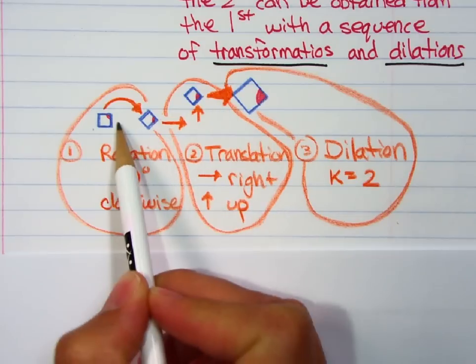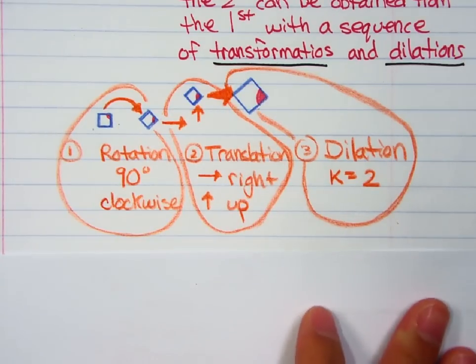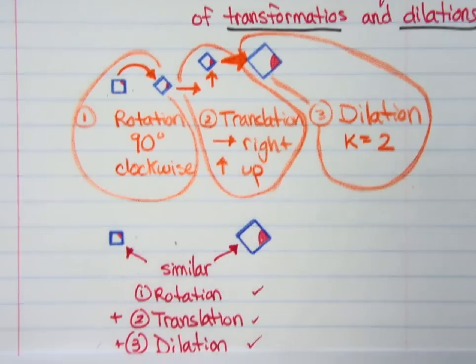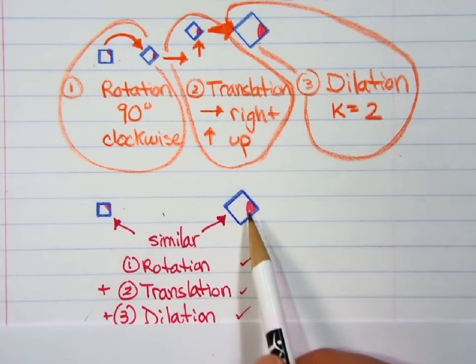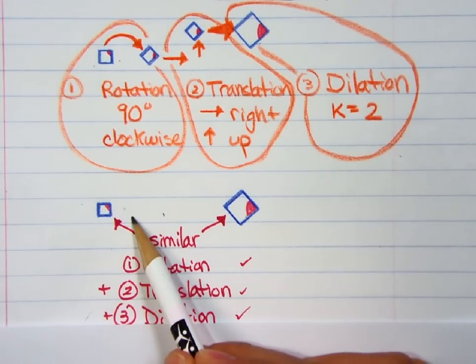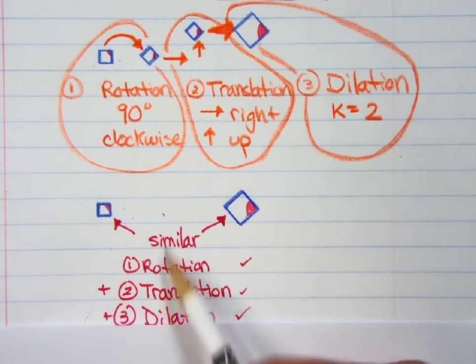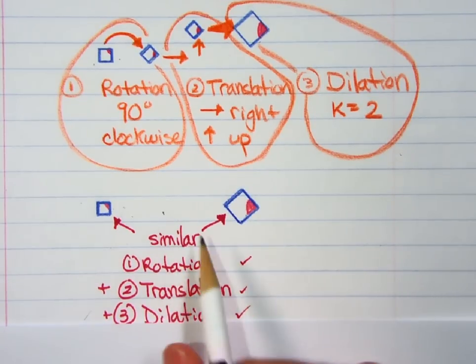These two here, the original one and the last one here, would be considered similar shapes. Okay, why are they similar? Because I can make this one from this one by just doing a couple of transformations that we've learned about.